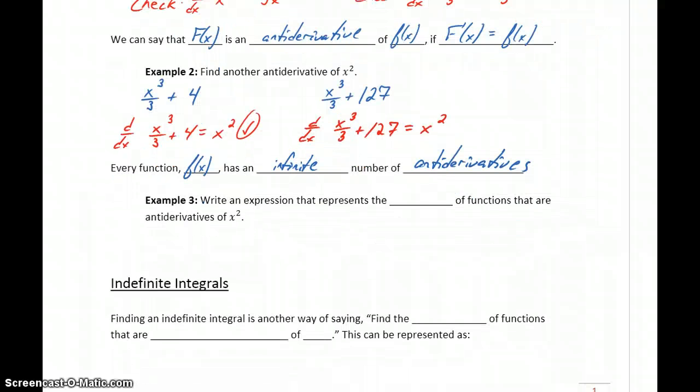We want to write a single expression that represents the entire family of functions that are antiderivatives of x squared. We can't list out this infinite number of solutions. So instead, what we would write is x cubed over 3, which is that general antiderivative. The derivative of this will lead us to x squared. And to represent that entire family, we'll add some arbitrary constant, plus c, where c is just some constant. So this expression represents the entire family of functions, capital F of x, whose derivative would lead us back to x squared.